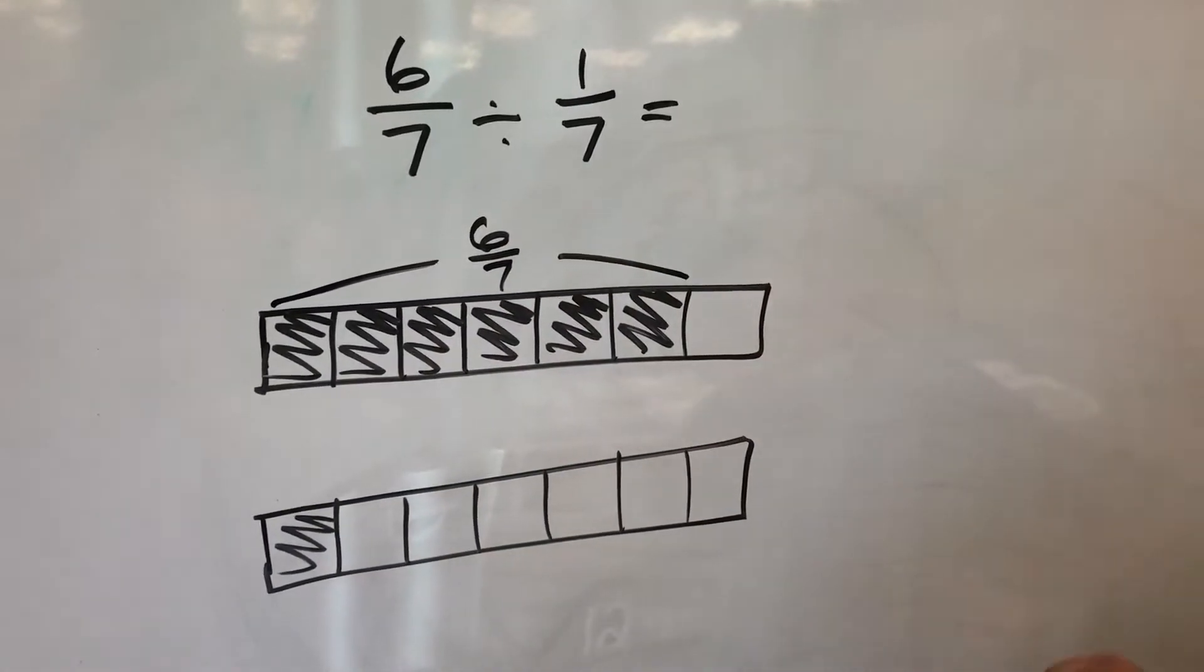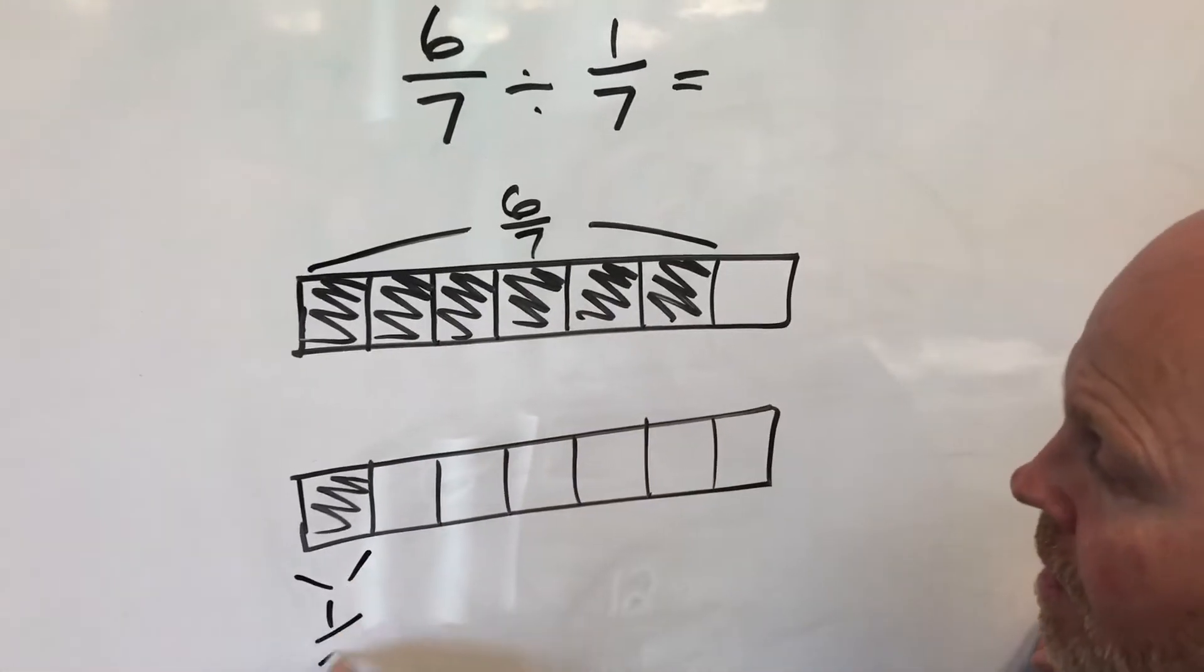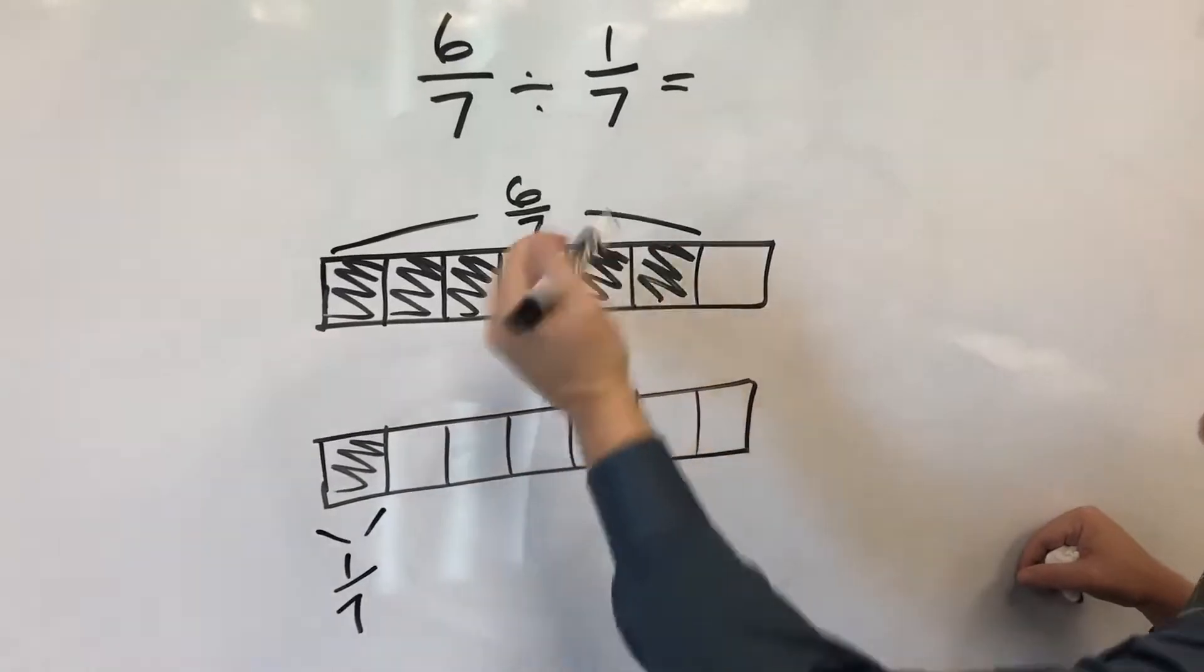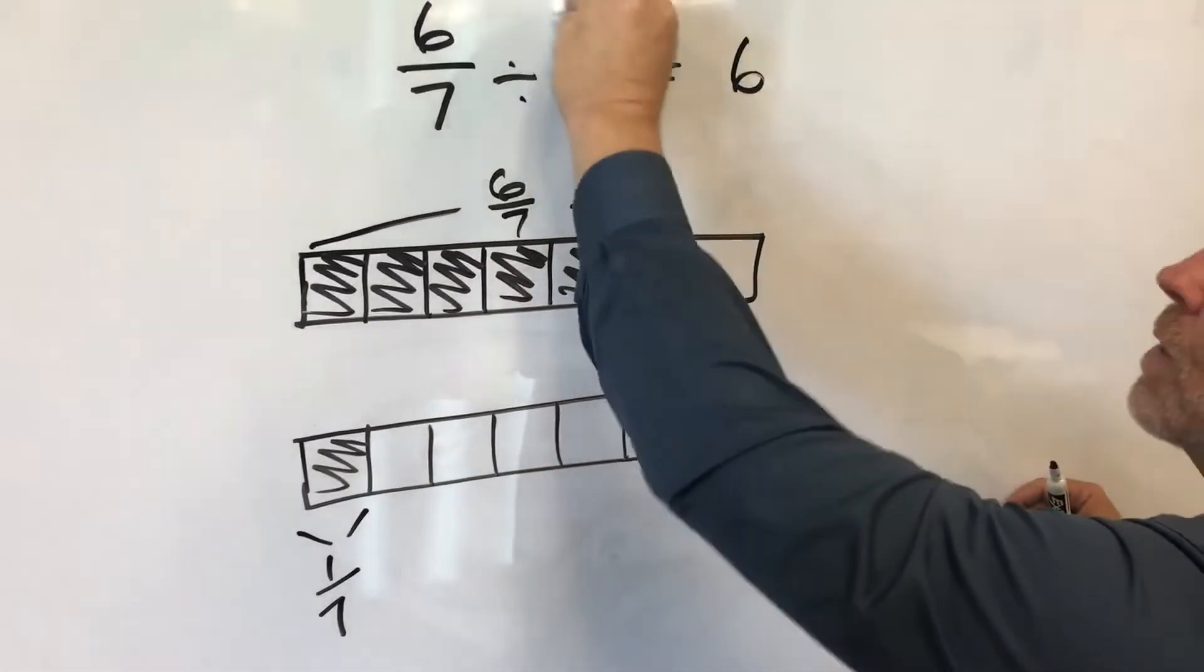And then here's one seventh. The idea is how many one sevenths fit into six sevenths, and obviously the answer is six.